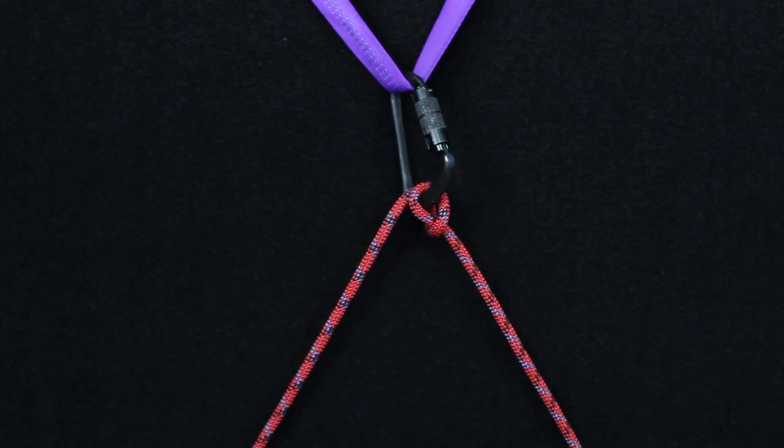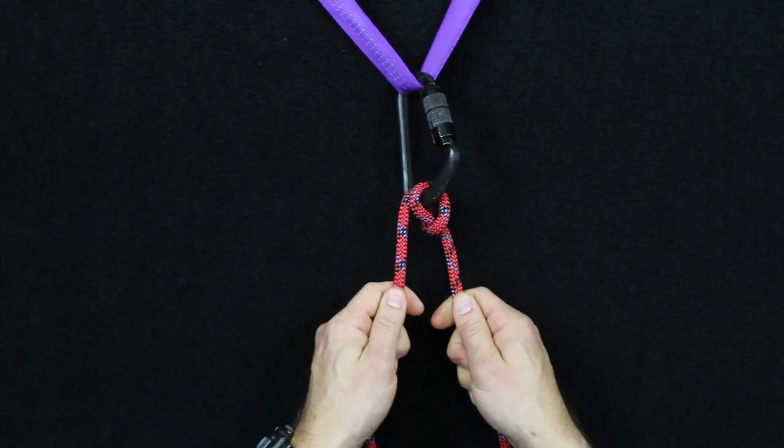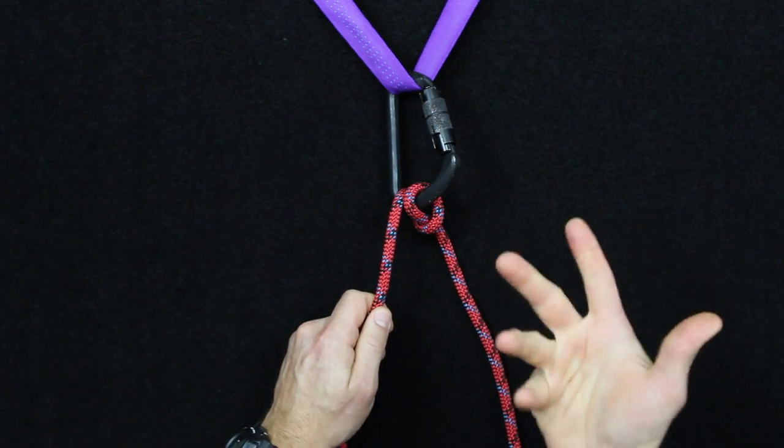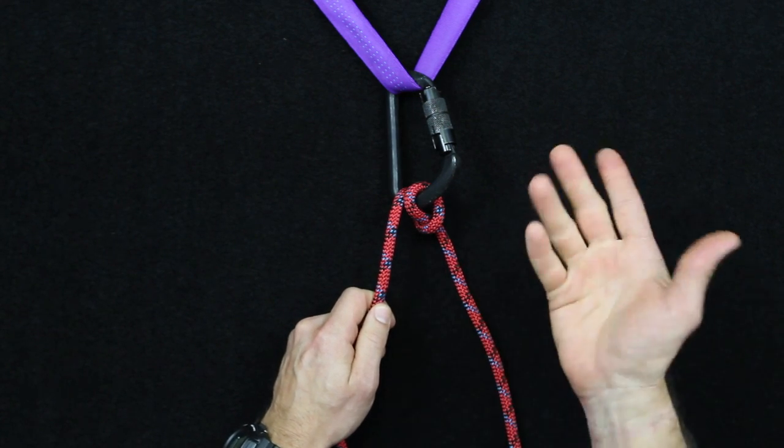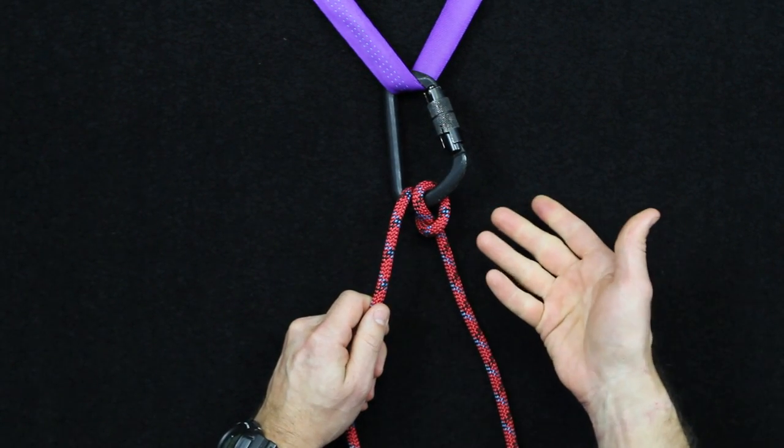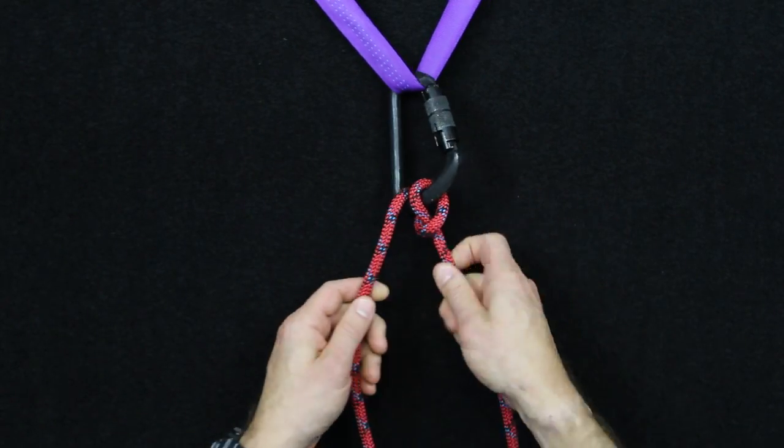So what this gives you now is the munter hitch, and what's great about it is it's reversible. The main use is as a friction device for controlling descents during a belay, but it can also be used to lower a load and also to prevent a fall. So in this case we have it used for belaying.